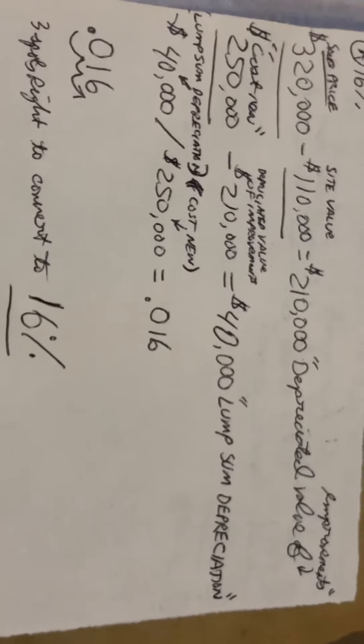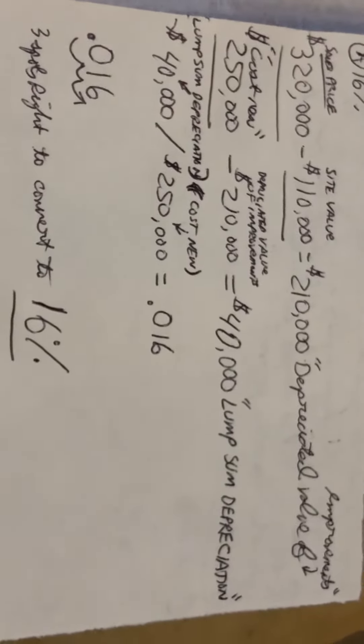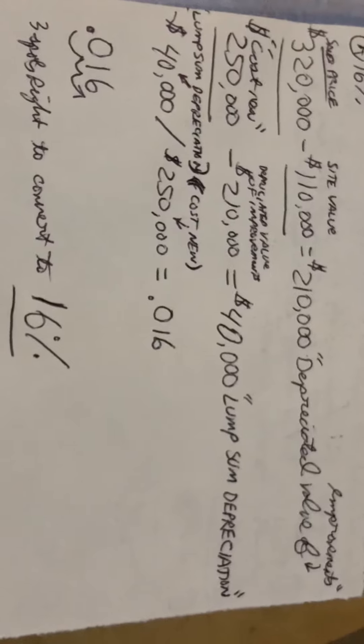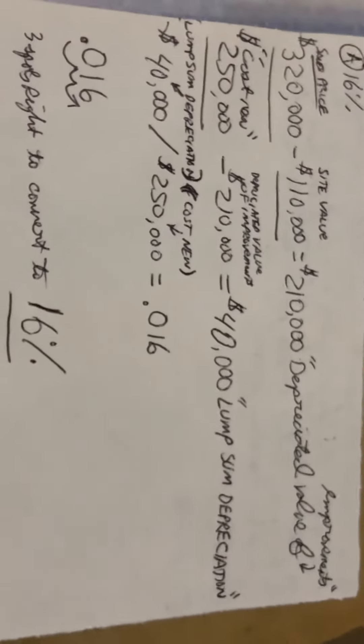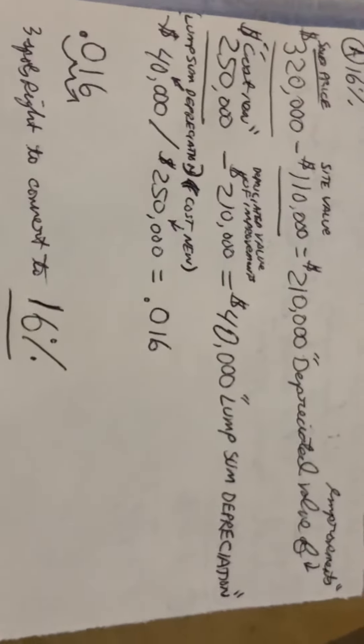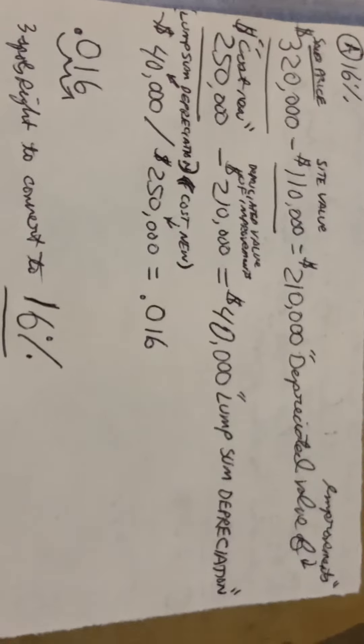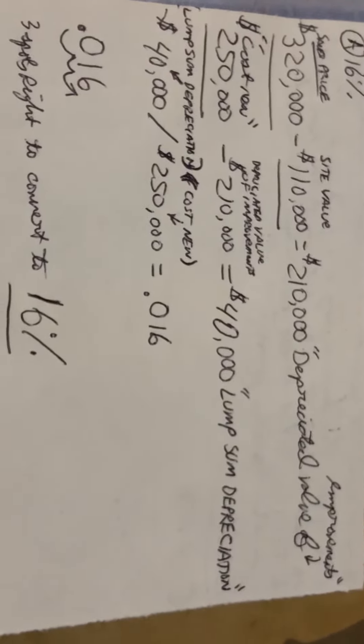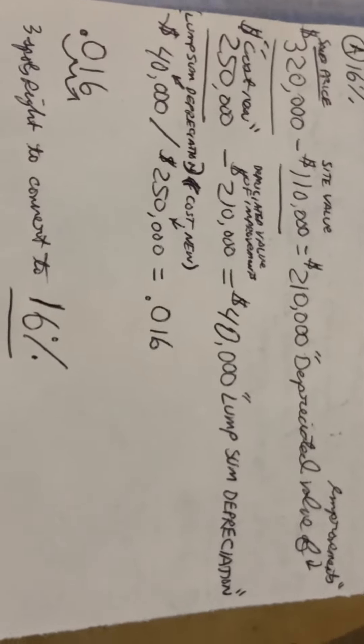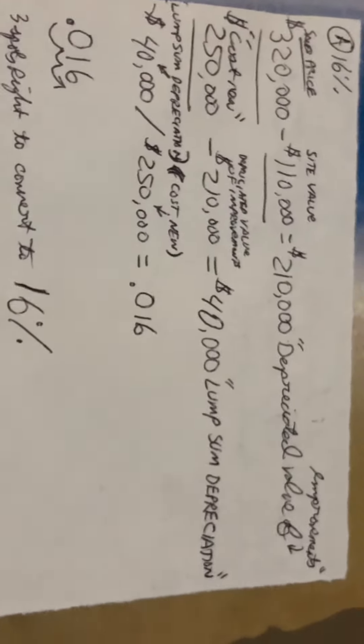You take the sales price, which was $320,000. You're going to minus the site value, which was $110,000. That equals $210,000 depreciated value of improvements. That's phase one of the math.